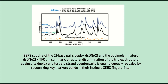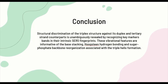In Figure 3, in summary, structural discrimination of the triplex structure against its duplex and third-strand counterparts is unambiguously revealed by recognizing key marker bands in their intrinsic SERS fingerprints. These vibrational features are informative of the pi-stacking, Hoogsteen hydrogen bonding, and sugar-phosphate backbone rearrangements associated with the triple helix form.